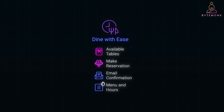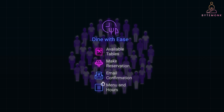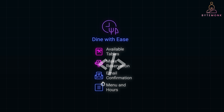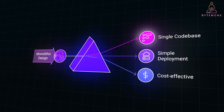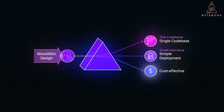Imagine you are developing a local restaurant reservation system. This application might allow users to view available tables, make a reservation, get email confirmation, or check the restaurant's menu and opening hours. This is a relatively straightforward application with only a few core features. Since the expected user base is limited — perhaps hundreds or thousands of users at most — and the application doesn't have significant complexity or traffic, a monolithic design would likely be the best fit. All the features — table booking, menu viewing, and confirmation — can be encapsulated in one codebase sharing a single database. You can deploy the entire application in one go on a single server or cloud instance, which cuts down both infrastructure cost and the complexity of maintaining multiple systems.